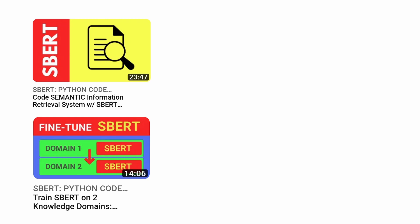A little bit easier: if you've fine-tuned an SBERT sentence transformers system on one domain — let's say mathematics — and you want to train it now on a second domain like physics or chemistry, there's a specific video where I show you how to train SBERT on two knowledge domains.